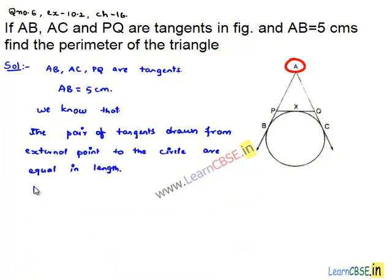Consider from point A: AB and AC are two tangents, therefore AB length equals AC length, which is 5 centimeters. From P, two tangents are drawn: PX and PB.